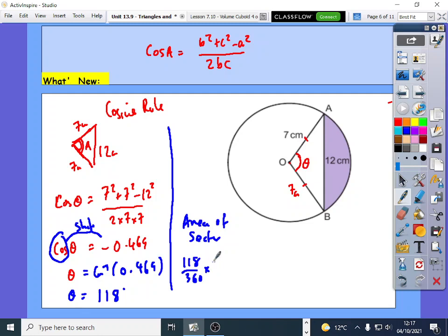Now area of sector is simply 118 over the full circle 360, times pi r squared. Pi times r squared, where r is the radius, 7. So if you put that into your calculator, 118 over 360 multiplied by pi times 7 squared equals, you'll get 50.46.